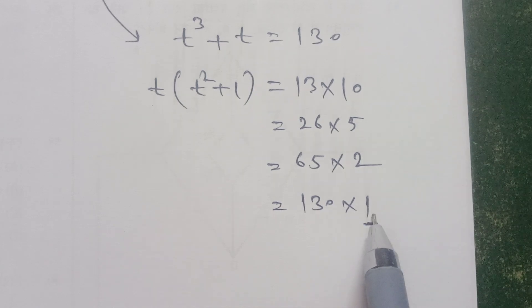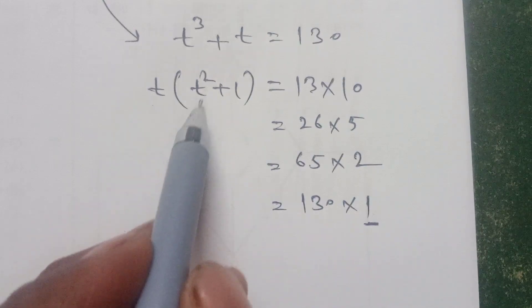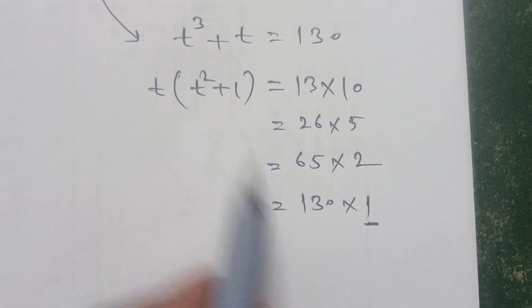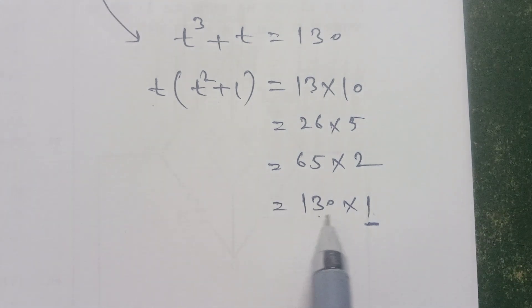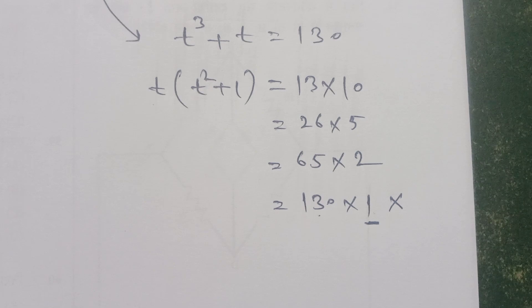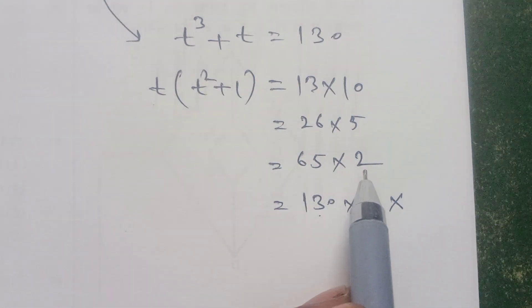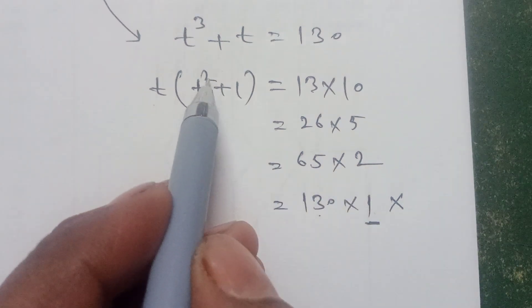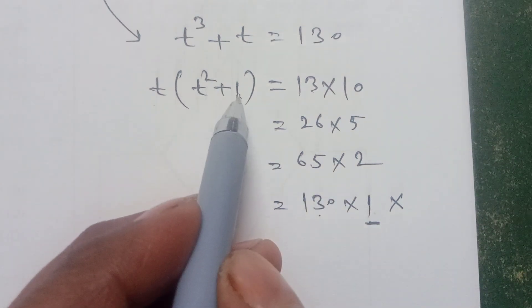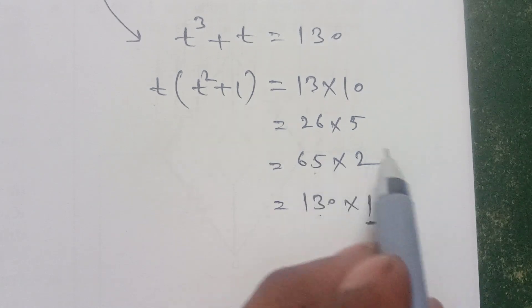If t is equal to 1, then 1 squared plus 1 is 2, but this is 130, so it is not possible. Second, t is equal to 2. We check 2 squared is 4 plus 1 is 5, but this is 65, so it is not possible.